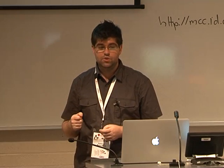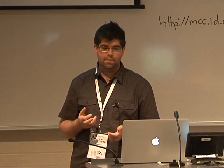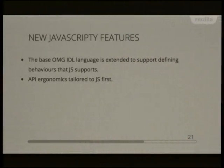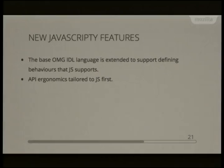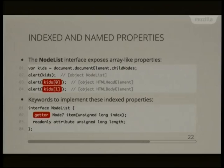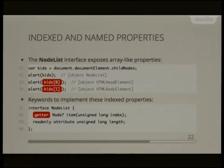The other part was evolving the IDL language to allow more JavaScript-like APIs, while still maintaining some level of language independence so interfaces could be mapped to Java or Objective-C if needed. One example of a new feature in Web IDL not in OMG-IDL is indexed and named properties. For example, the NodeList interface — returned by .childNodes — exposes children as array-index-like things using square bracket notation, which simply cannot be expressed in OMG-IDL.